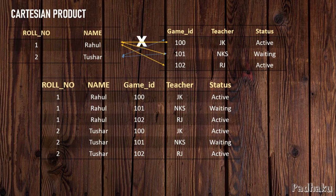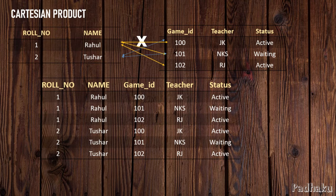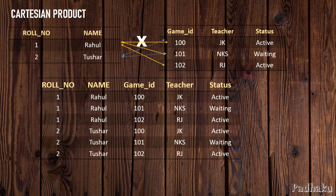We are just multiplying row 1 with all rows of the second table, and row 2 with all rows of the second table. Let's revise what we learned — what would be the degree and cardinality of Table 1, Table 2, and the Cartesian product table? Pause the video and guess.